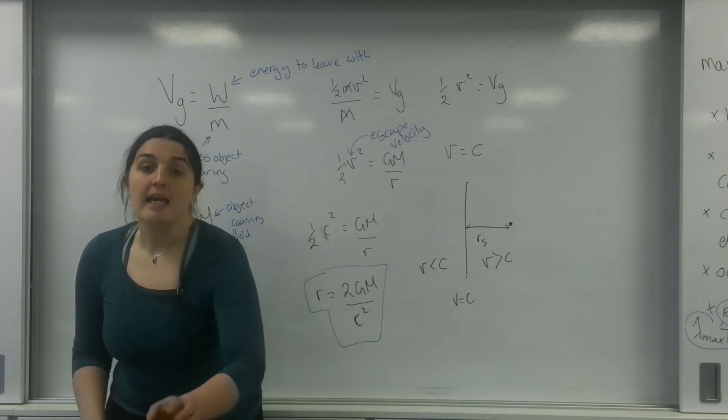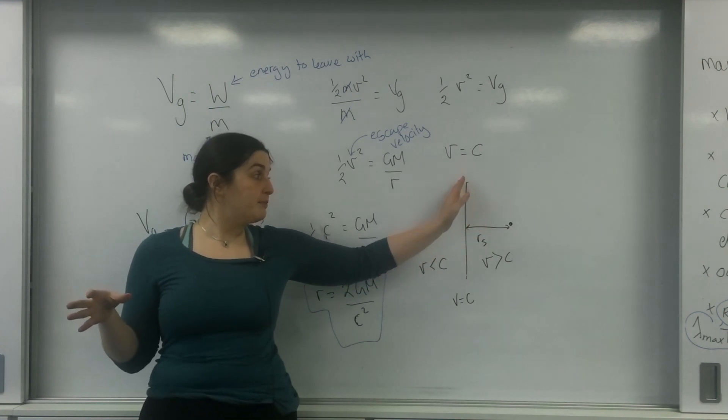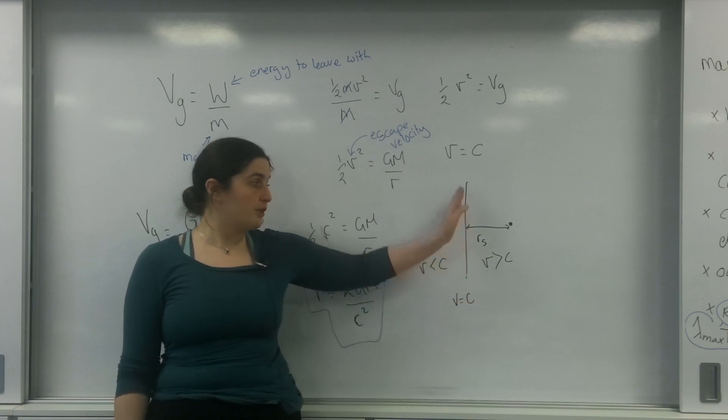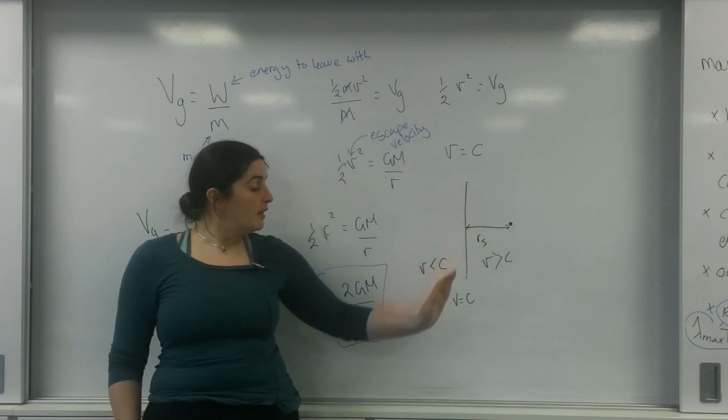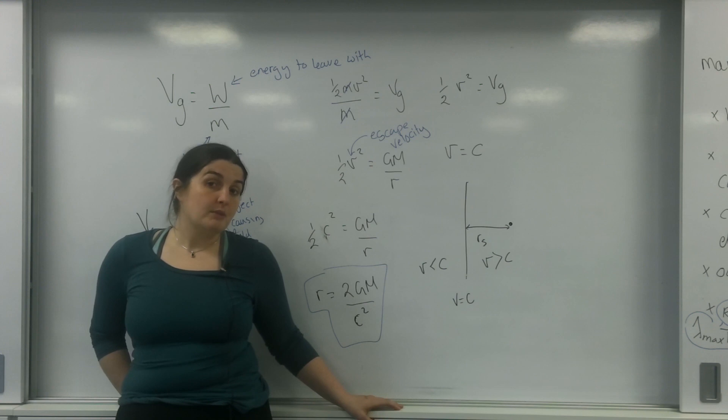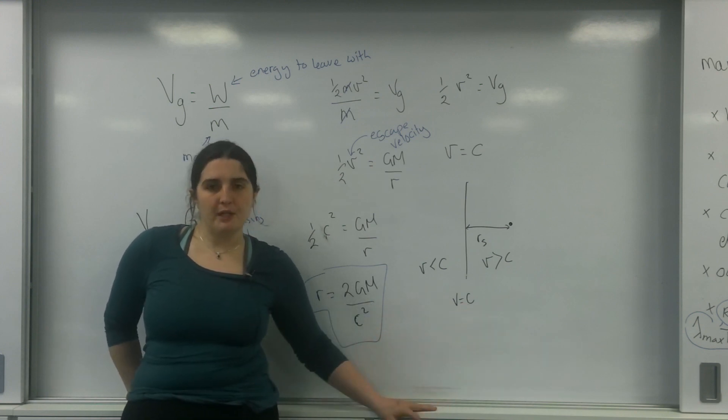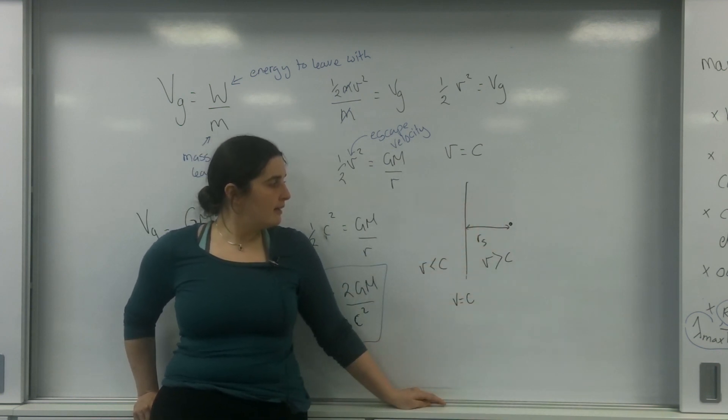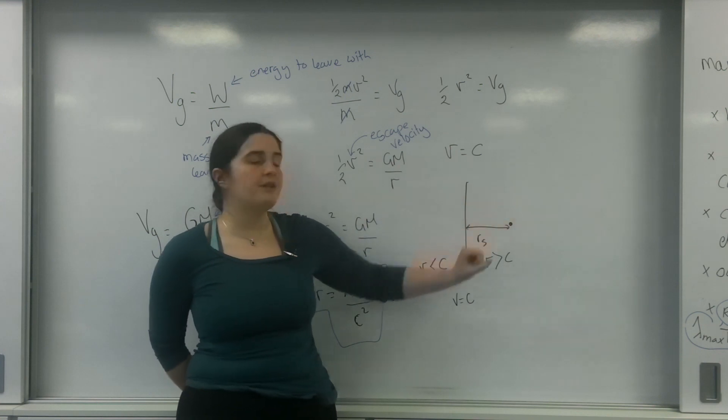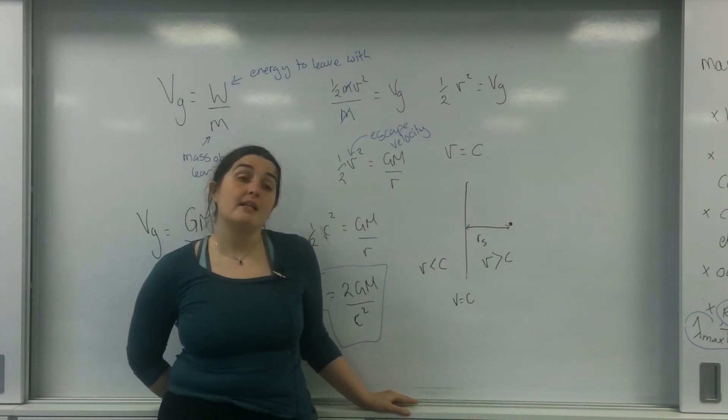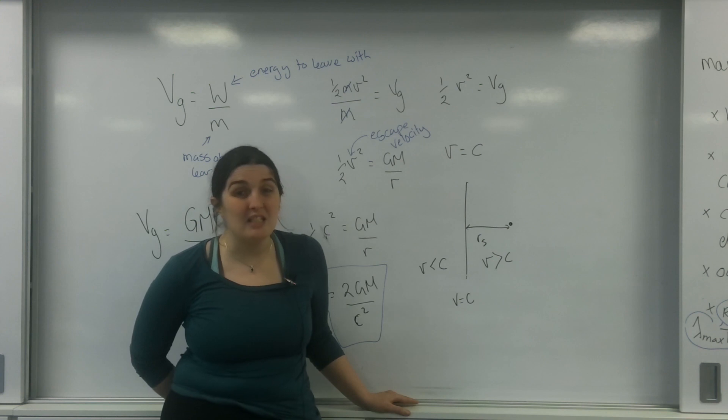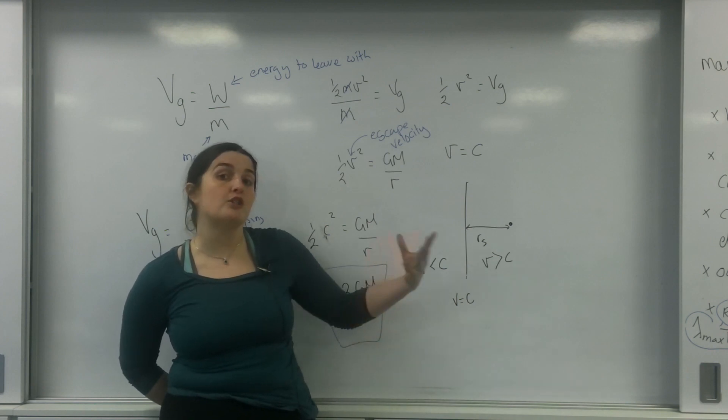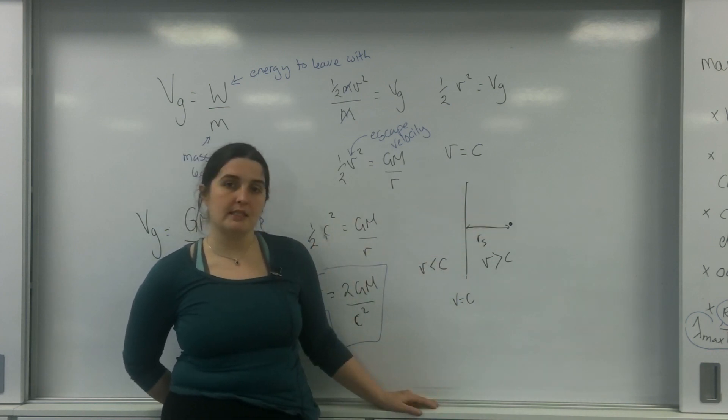So this Schwarzschild radius is the smallest that a star would have to be. I would be at the surface of it. If the star was this big at this Schwarzschild radius, I would be at the surface of the star. This is the smallest it would have to be for me to mean moving at the speed of light to leave it. If it shrunk any smaller than that, if the surface was much smaller, I would need a speed bigger than the speed of light. So this line here is known as the event horizon. This is the Schwarzschild radius away from the star itself.